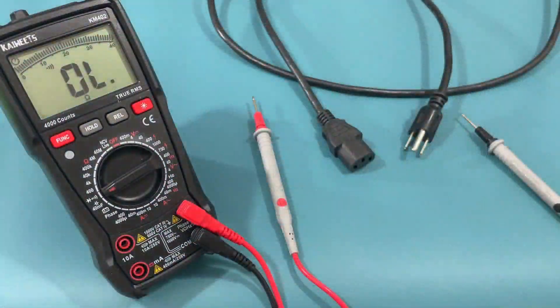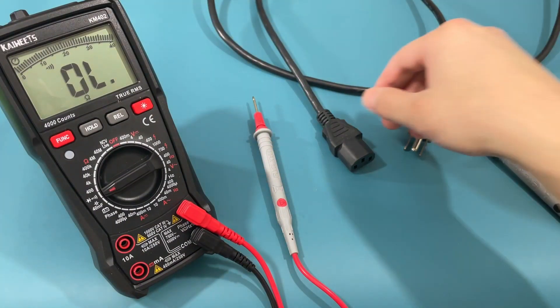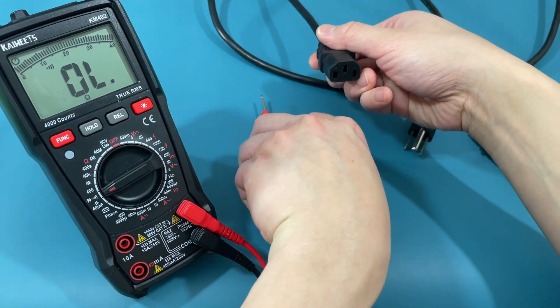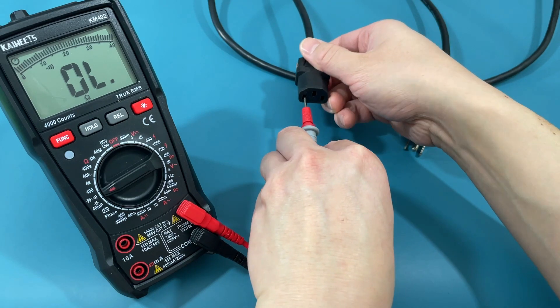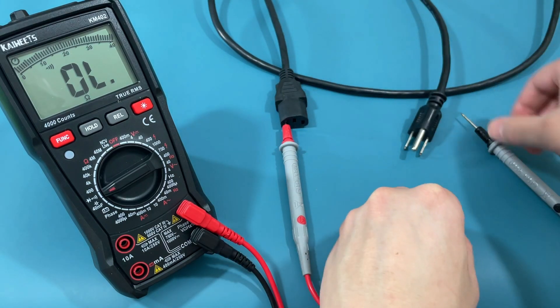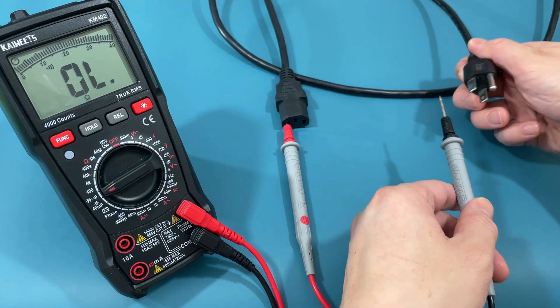This third wire is an extension cord. Insert the red probe into the first hole of the female connector. Touch the black probe to the first prong of the male connector. You should hear a beep if there is continuity.